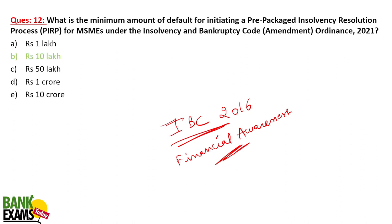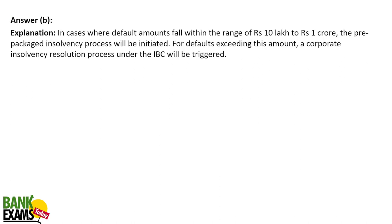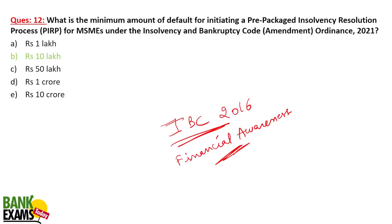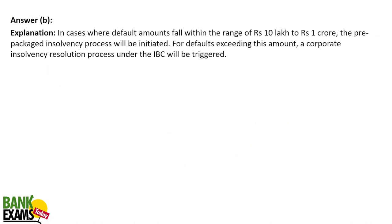So the minimum is 10 lakhs. CIRP — corporate insolvency resolution process — applies above 1 crore. So minimum 10 lakhs, maximum 1 crore is under the pre-package insolvency resolution process. This was especially introduced for MSMEs. I have explained the procedures and processes in depth in the course, so please go through that. That's very, very important.